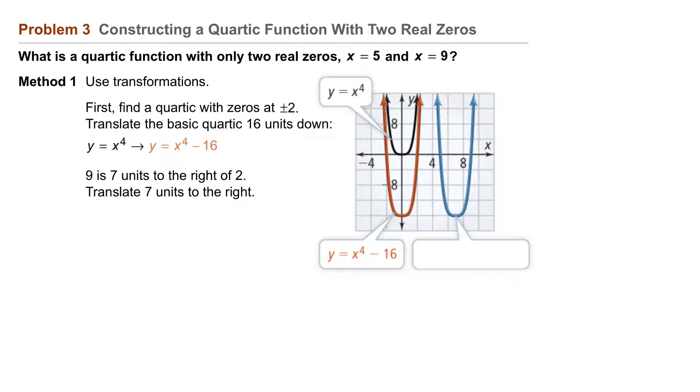Nine is seven units to the right of two, so we translate seven units to the right. Our function y equals x to the fourth minus 16 becomes y equals the difference x minus 7 to the fourth power minus 16. So a quartic function with its only real zeros at 5 and 9 is y equals x minus 7 to the fourth power minus 16.